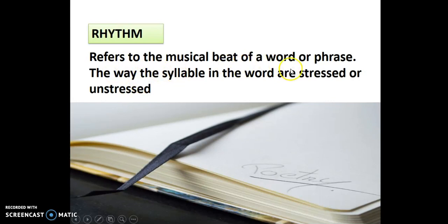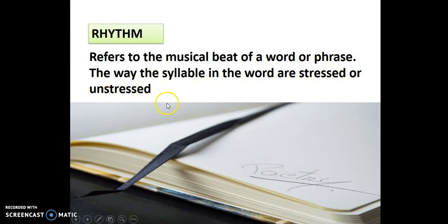Rhythm refers to the musical beat of a word or phrase — the way the syllables in a word are stressed or unstressed. Just like in everyday language we stress words to add emphasis, in poetry there is a musical beat that gives stress or leaves syllables unstressed, creating a rhythmic structure.